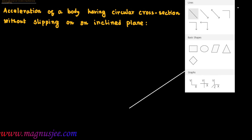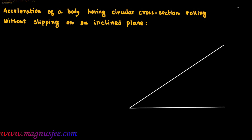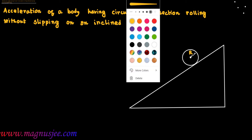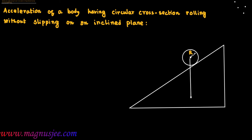This is an inclined plane, and below it is the horizontal plane. A body having circular cross-section is placed on this inclined plane. This body has radius small r — it should be small r, not capital R. The weight of the body mg acts vertically downwards, and this angle is the angle of inclination, theta.